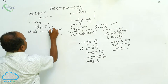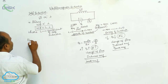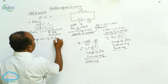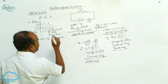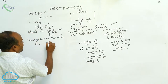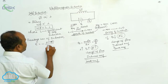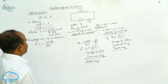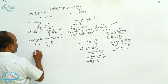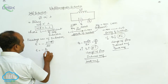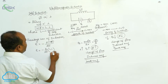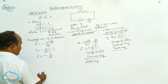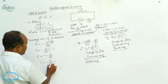Since nΦ = Li, and according to Faraday's law of induction, the induced EMF E equals the negative rate of change of flux: E = -d(nΦ)/dt. Therefore, substituting nΦ = Li, we get E = -L·(dI/dt). Rearranging, L = -E / (dI/dt).